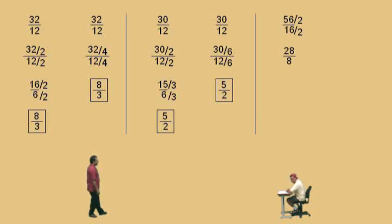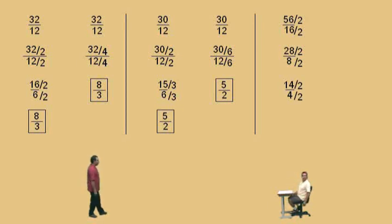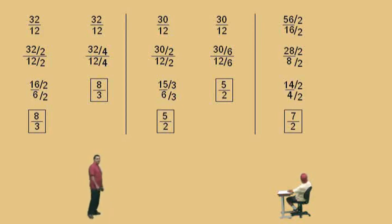Now, again, Charlie, we can divide by twos. What's twenty-eight divided by two? Fourteen. And eight divided by two? Four. Very nice there, Charlie. Now, again, we can divide by two. Charlie, what's fourteen divided by two? Seven. And four divided by two? Two. Very nice there, Charlie. So now we have our fraction reduced to lowest terms: seven over two.